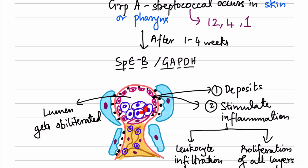To summarize the pathogenesis: there is a streptococcal infection in the skin or pharynx. One to four weeks later, streptococcal exotoxin B or GAPDH antigens are deposited onto endothelial cells — this period allows antibody production. Antigen-antibody complexes appear initially on the sub-endothelial side, then move to the sub-epithelial side. These immune complexes stimulate inflammation causing leukocytic infiltration and proliferation of all three glomerular layers.